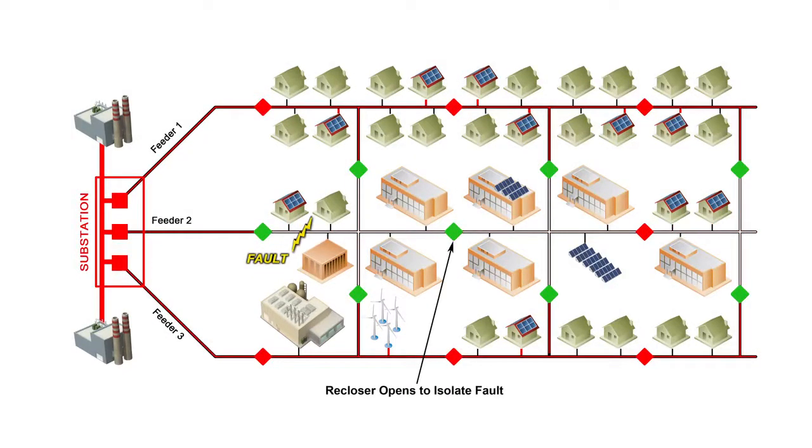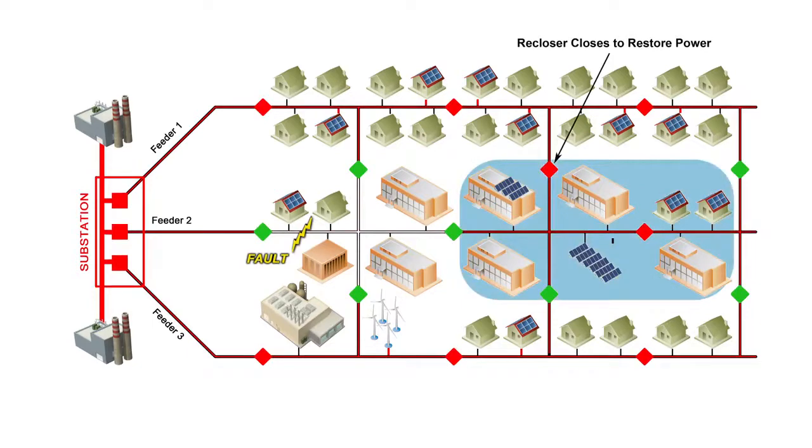It isolates the fault at just one portion of the feeder, and then through switching, reroutes the power from another direction to restore as many customers as possible.